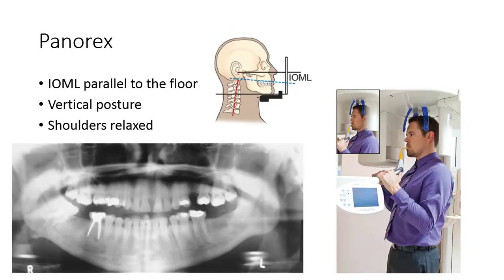While the Panorex view requires special equipment and is not covered on the ARRT Registry exam, we will briefly discuss positioning criteria here. The patient must be standing upright to use this equipment with the teeth in the bite guard. The IOML should be parallel to the floor, and the patient should have a vertical posture with shoulders relaxed as far down as possible. The tube and IR rotate around the patient's head, and these positioning requirements should eliminate collision of the tube or IR with the patient's shoulders, which could cause injury and require a repeat image.